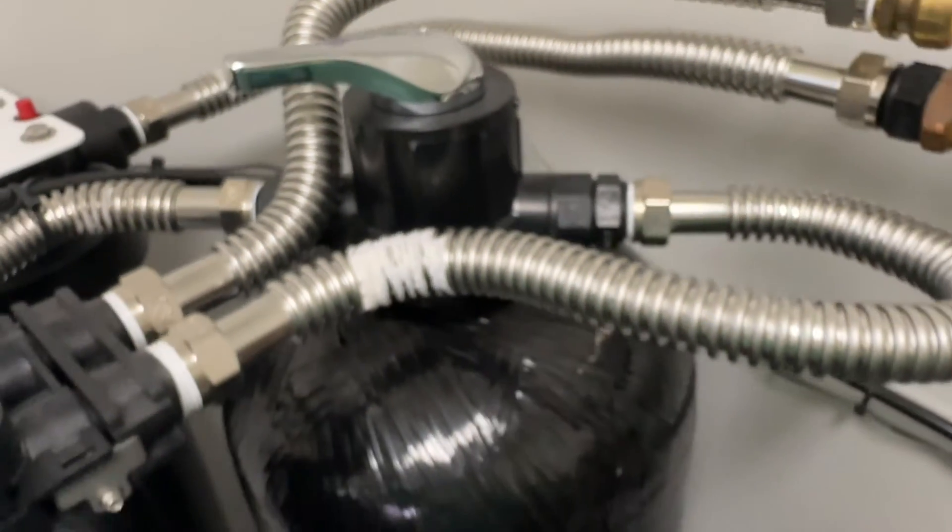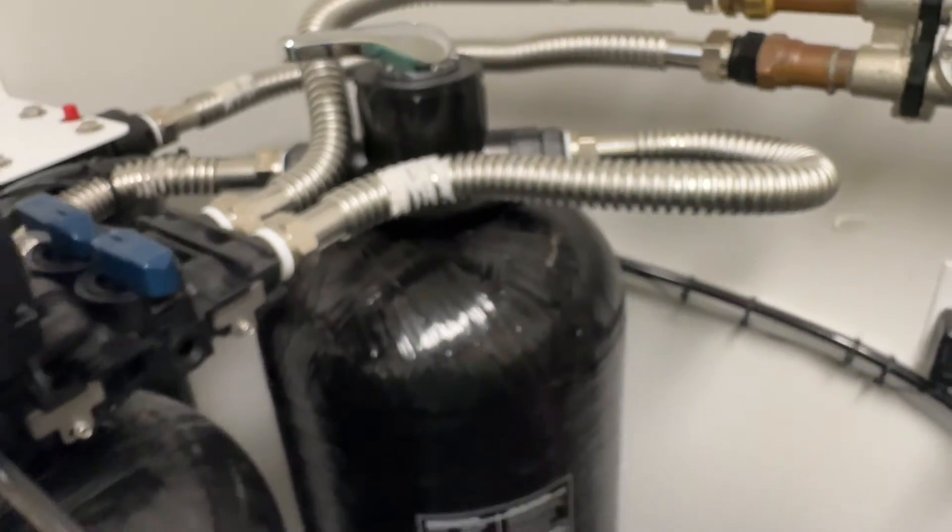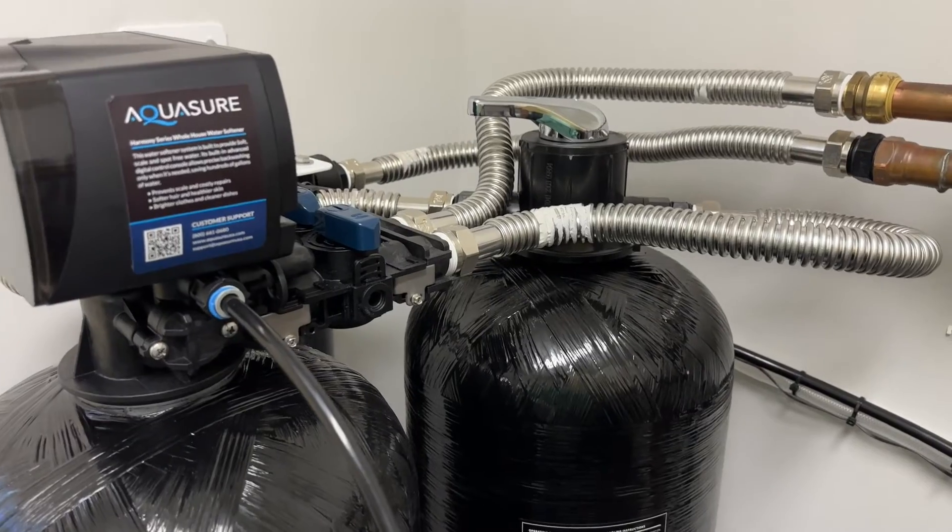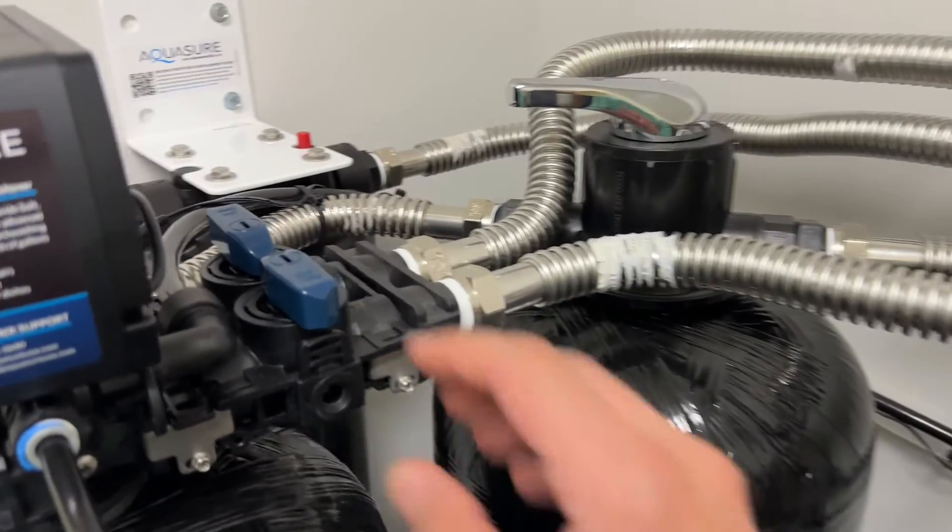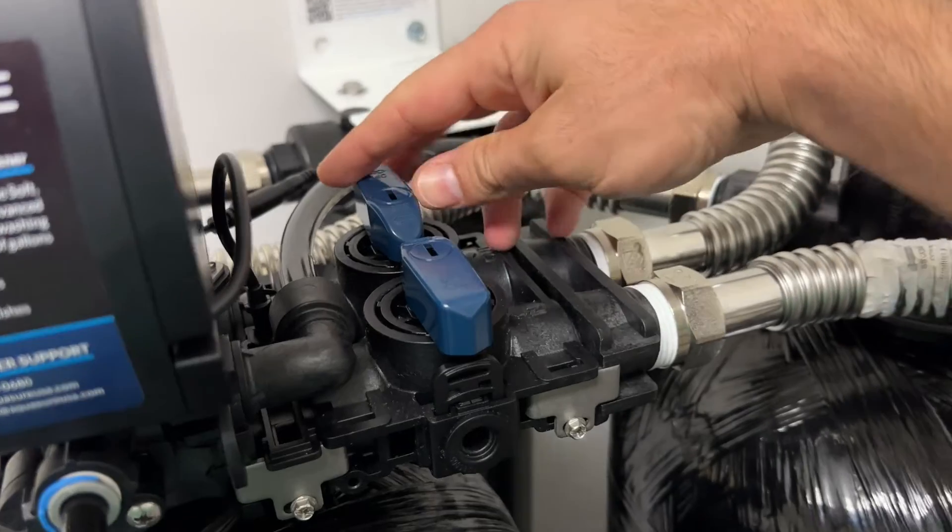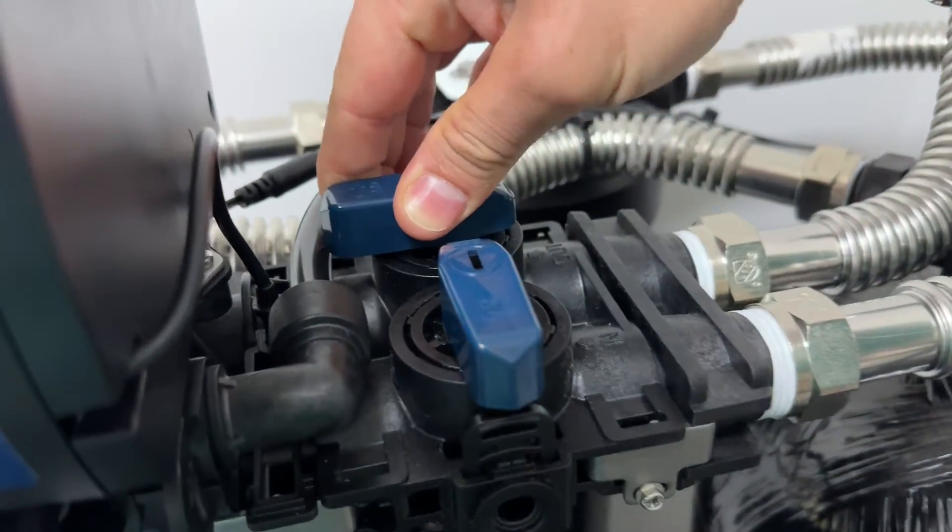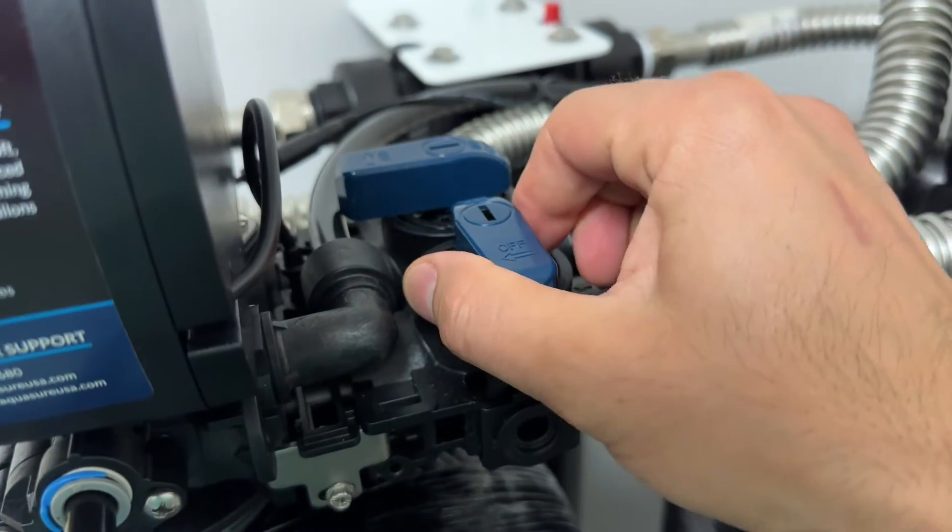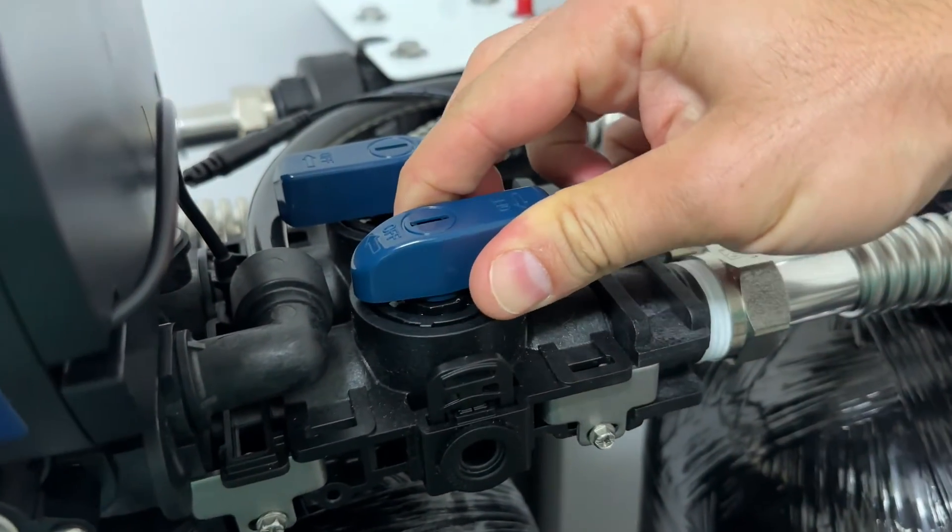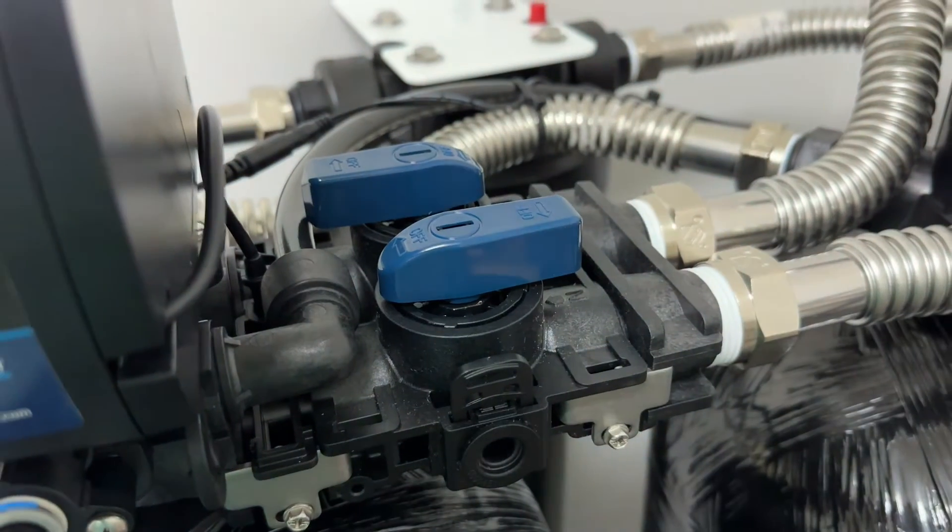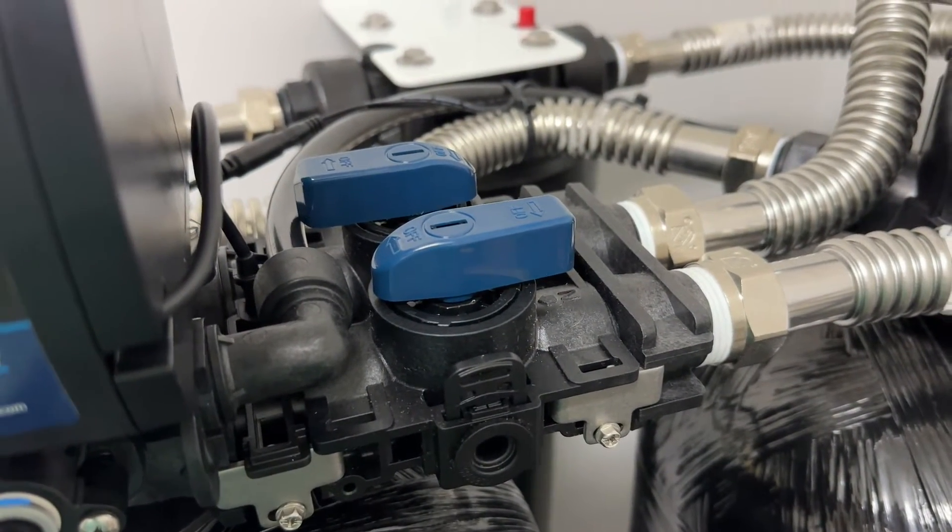Once that's done you got one more step don't forget. Now the very last step do you remember? Bypass. So we're going to turn this bypass lever to the left until it locks into place. Turn this one to the left until it locks into place and now we're good to go. That's it.